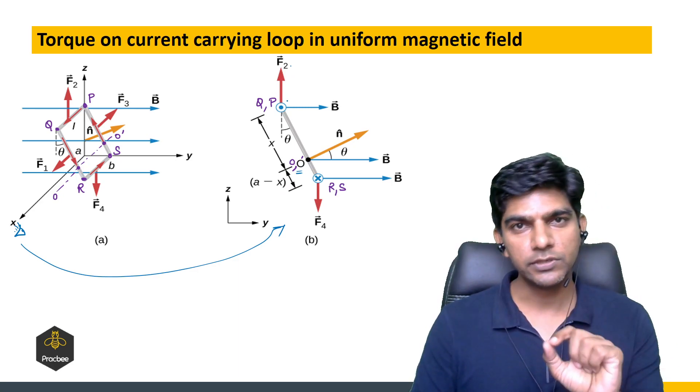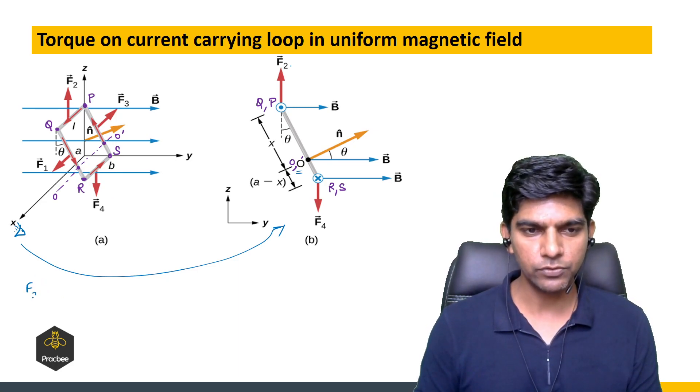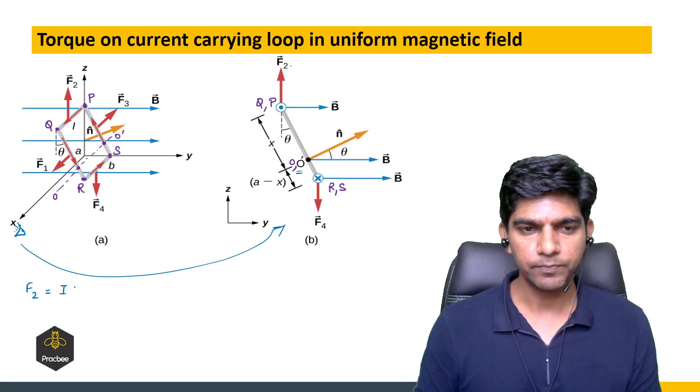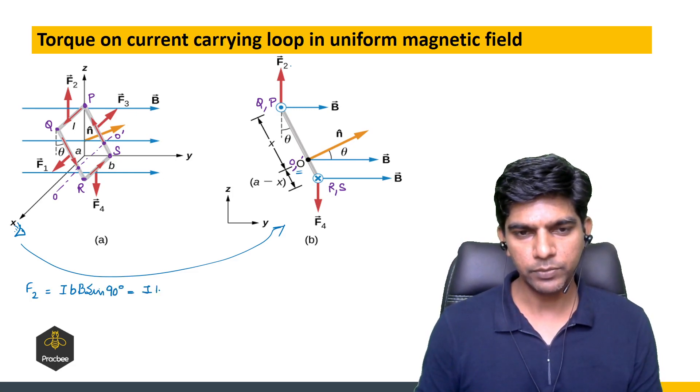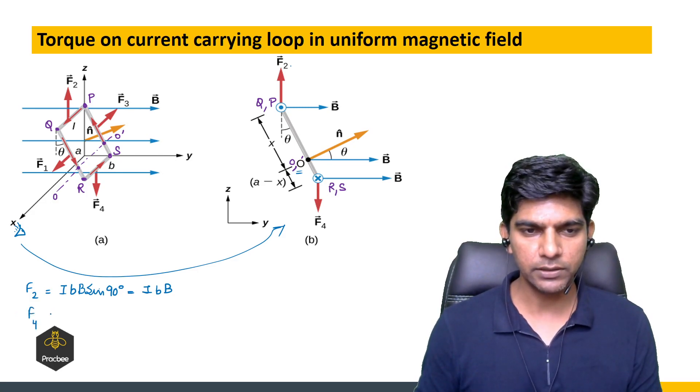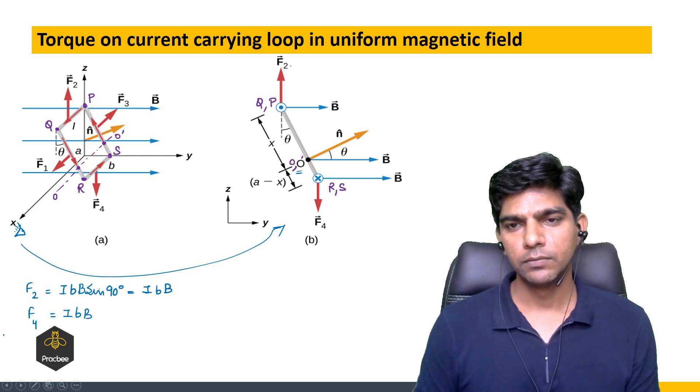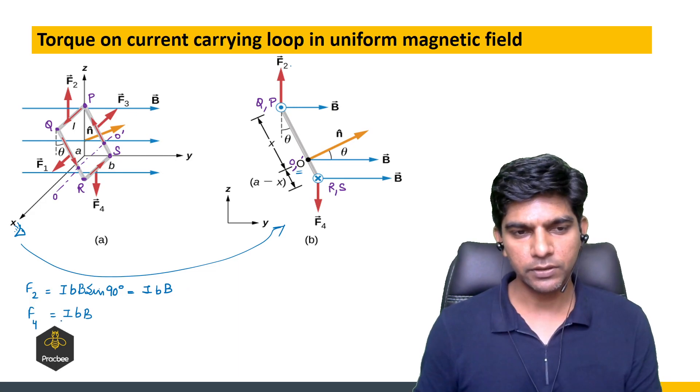So you can say that for these forces, first of all let us find the magnitude of these two forces. F2 will be I, length is B, times magnetic field, sine 90 degrees, so it will be I B times capital B. Similarly F4 is again I B times capital B. Both forces have the same magnitude.